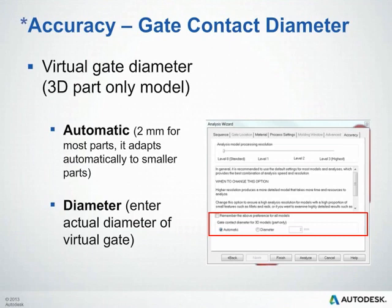Another setting in the Accuracy tab is the gate contact diameter, which is only relevant for 3D analyses. There are two options: Automatic, which specifies a 2mm contact diameter (automatically adjusted for small parts), and Diameter, where you specify your own contact diameter. Keep in mind this is great for a preliminary iterative analysis, but this setting is not meant to replace modeling a feed system.